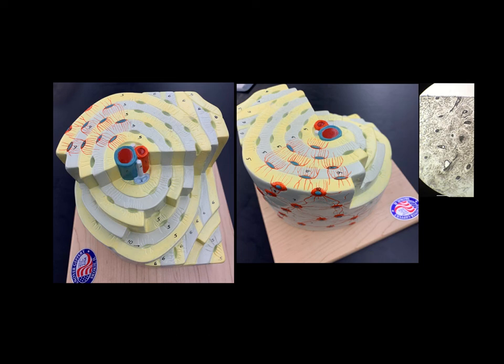And each osteocyte is connected to neighboring osteocytes with these extensions of its cytoplasm. And these extensions of the cytoplasm are the canaliculi. We can see them over here on this image. And very, very faintly, you can almost see some canaliculi extending from the osteocytes in the actual microscope slide.